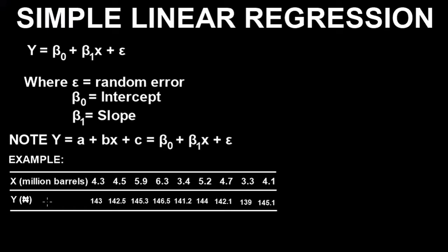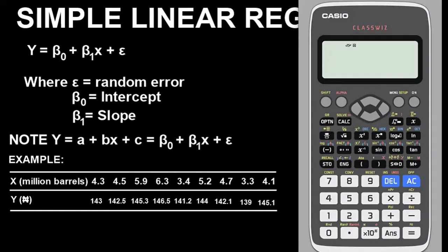This is the Casio fx ClassWiz calculator. As usual, the very first thing you have to do is clear it. The essence of doing it is to put the calculator in default mode or to reset it to remove whatever previous value or mode you might have placed the calculator on. Press Shift, 9, for the instruction menu. Press 1 for Initialize All, then press 1 and 1 again. We have cleared the calculator, now in default mode.